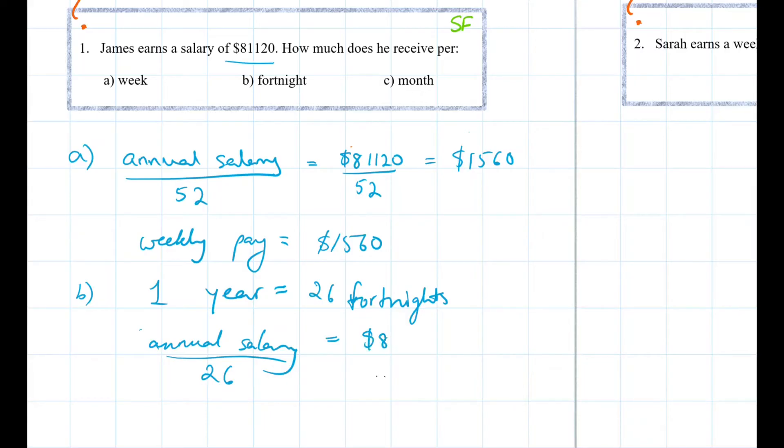To get the answer you need to divide your Annual Salary by 26. So even if you do make a mistake later on in your working, you're still getting marks for the first part because you knew what you were doing. Alright so let's work that out.